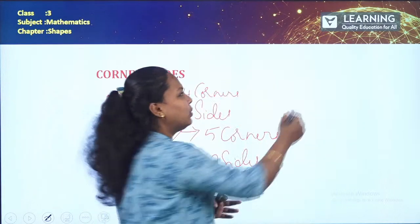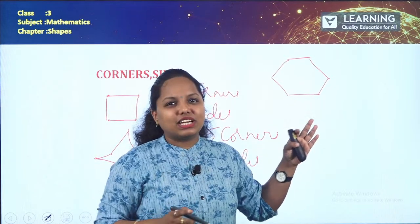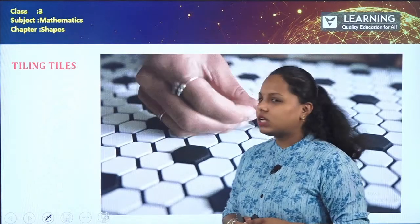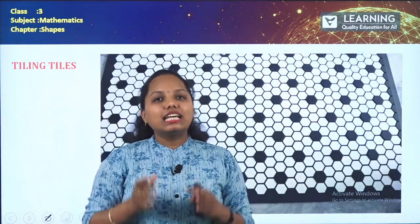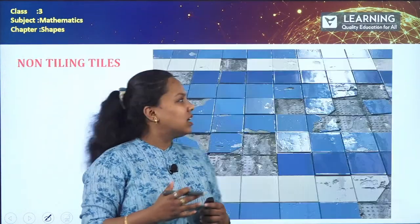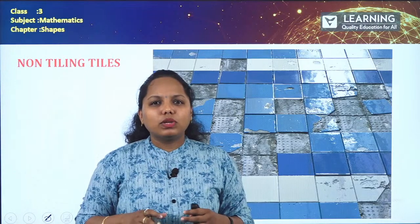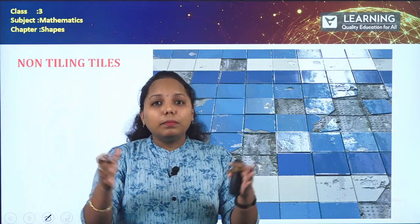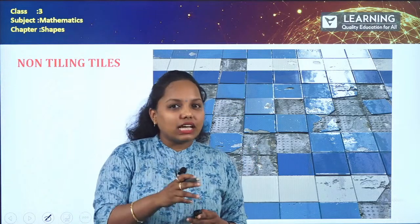Now that's an assignment for you — find out how many sides and corners the given picture has, and comment in the comment section. Moving to the next concept: tiling tiles and non-tiling tiles. Tiling tiles are tiles arranged without any gap. Non-tiling tiles have gaps between them — like what you might see at a construction site before the tiling is completed.